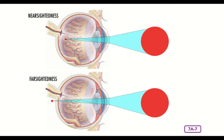In nearsightedness, the eyeball size in relation to the cornea affects its focusing power, so images are projected or focused in front of the retina. Nearby objects are seen clearly, but distant objects are out of focus. In farsightedness, the eyeball size affects the focusing power of the lens, so images are projected or focused behind the retina. Distant objects are seen clearly, but nearby objects are out of focus. Quick check: who is farsighted or nearsighted, and what does it mean for you? Pause the video to answer.